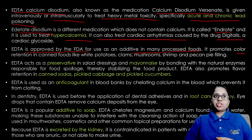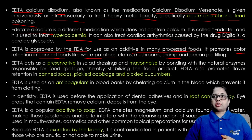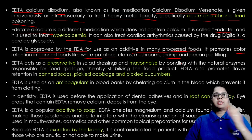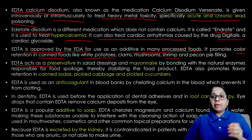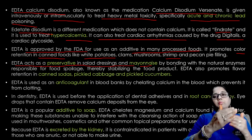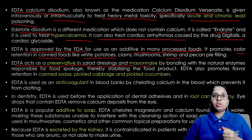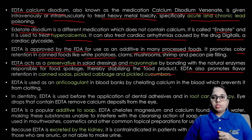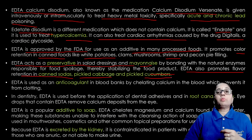EDTA promotes color retention in canned foods such as white potatoes, clams, mushrooms, shrimps, and pecan pie filling. Its usage is FDA-approved. EDTA also acts as a preservative in salad dressings and mayonnaise by bonding with natural enzymes responsible for food spoilage, thereby stabilizing the food product. EDTA also promotes flavor retention in canned sodas, pickled cabbage, and pickled cucumbers.